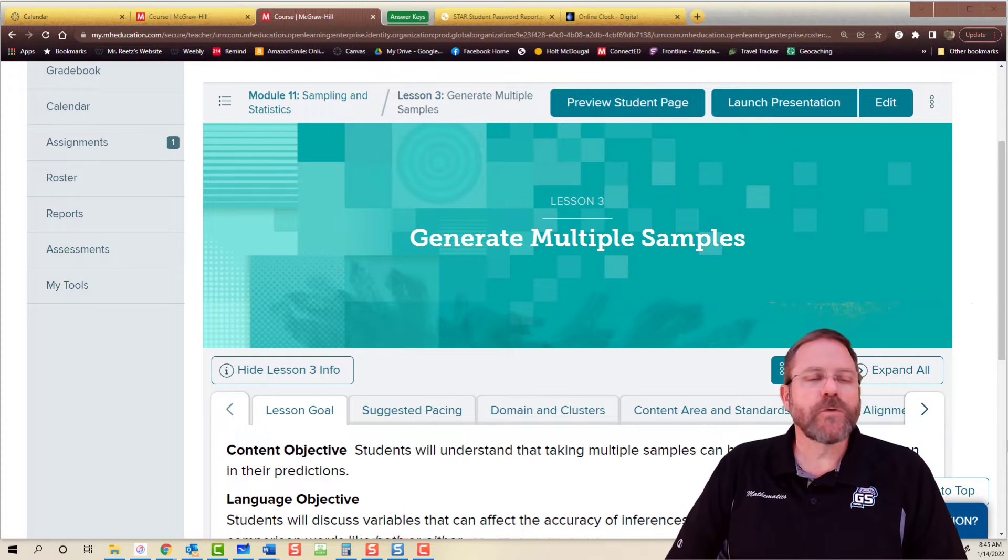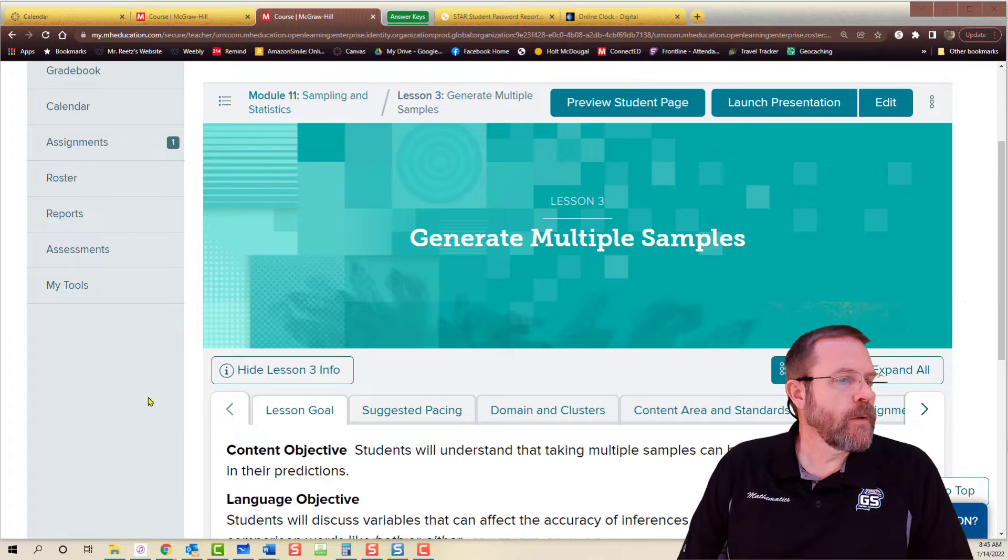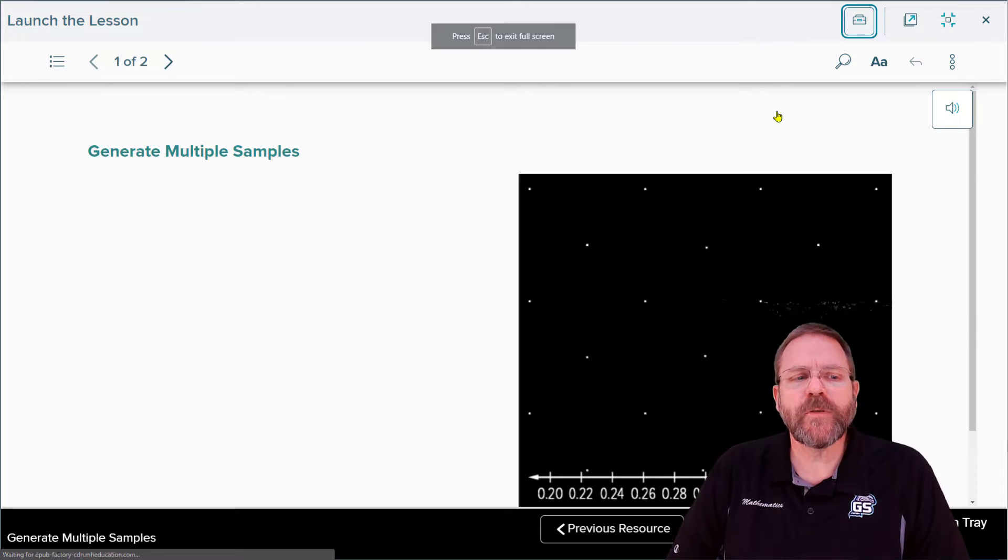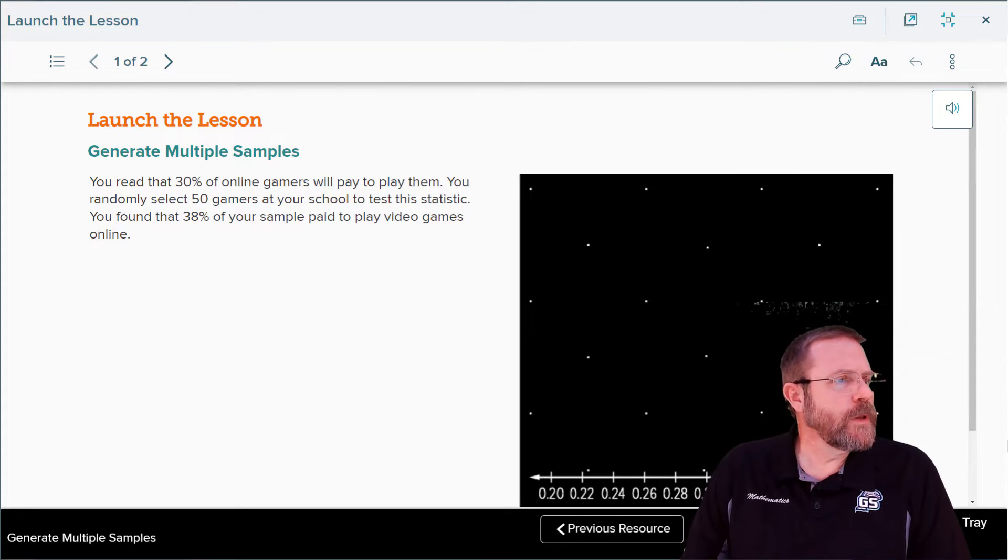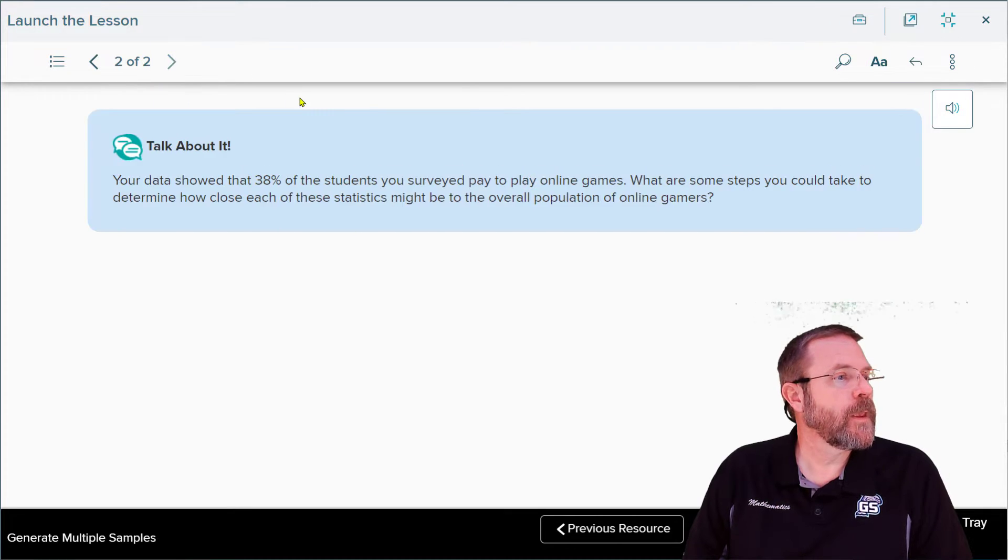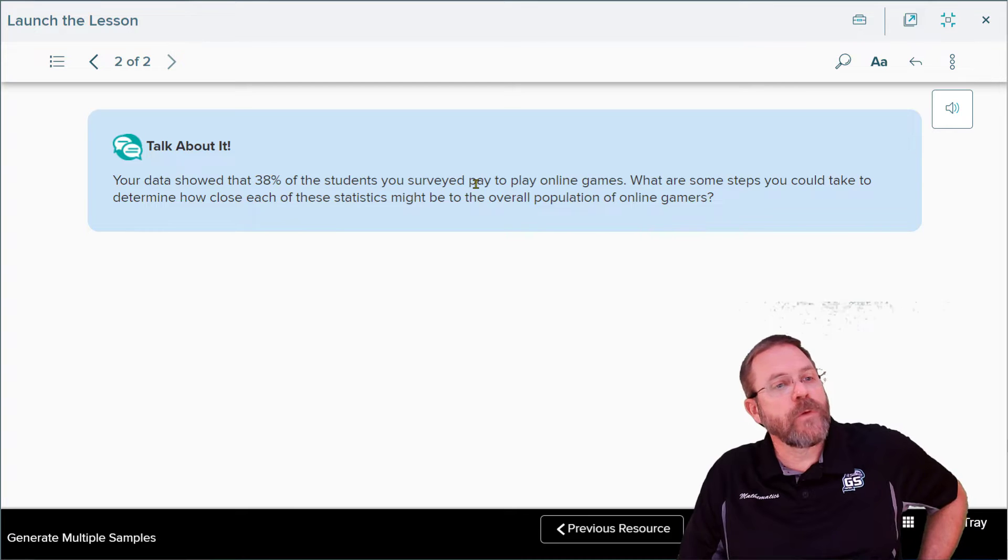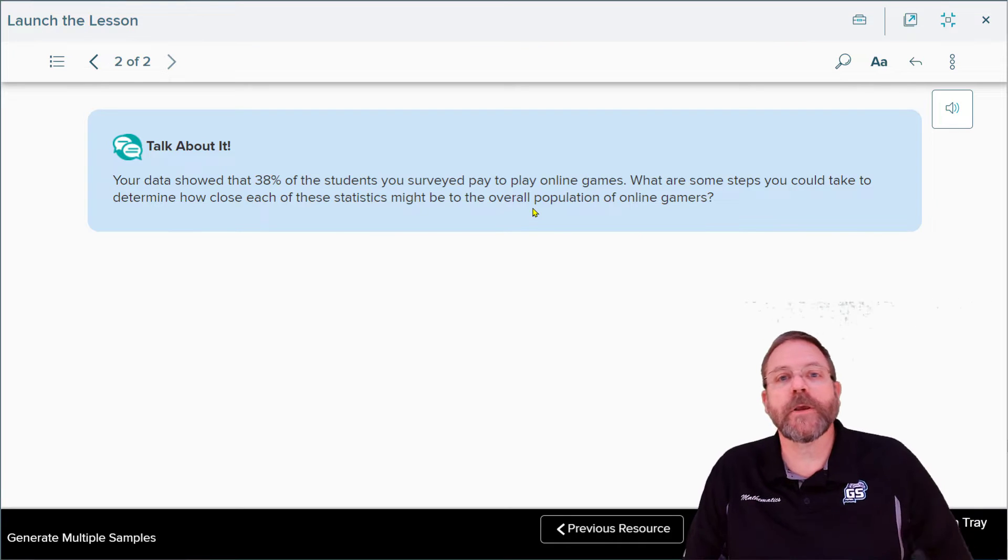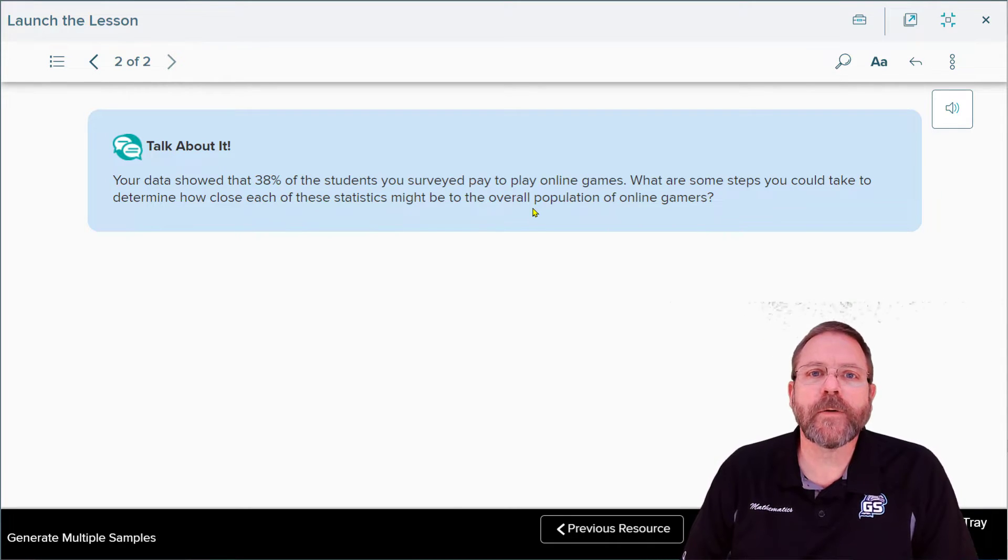Module 11 Lesson 3 covers generating multiple samples. The pacing guide says this is a two-day lesson with nine resources. You read that 30% of online gamers will pay to play. You randomly select 50 gamers at your school to test this statistic. Your data showed that 38% of the students surveyed pay to play online games. What are some steps you could take to determine how close each of these statistics might be to the overall population of gamers? These are some of the things we'll be talking about in today's lesson.